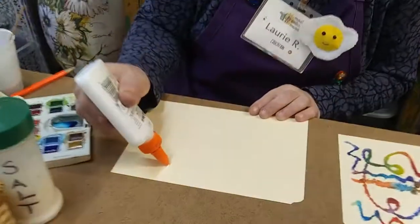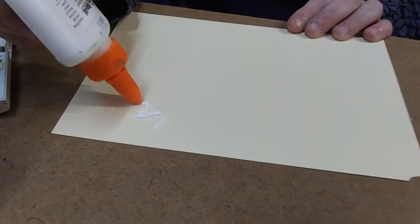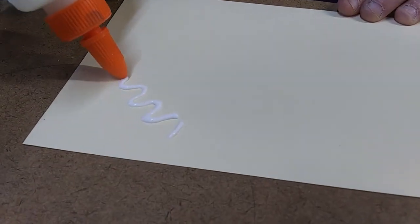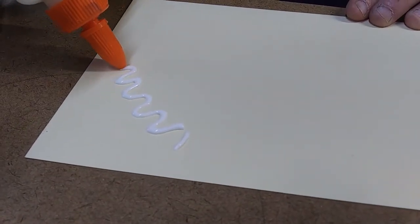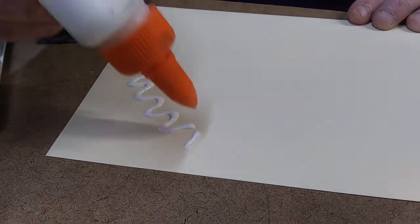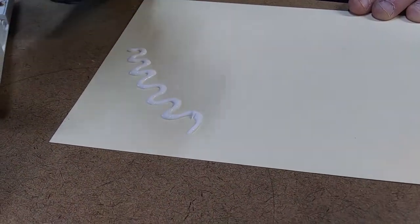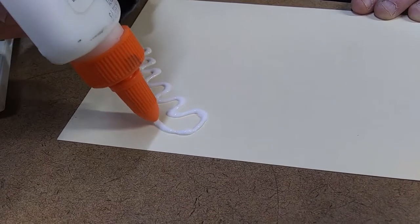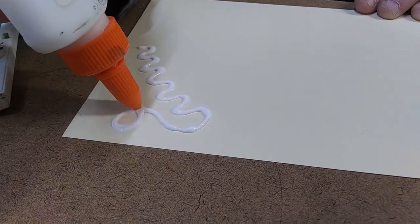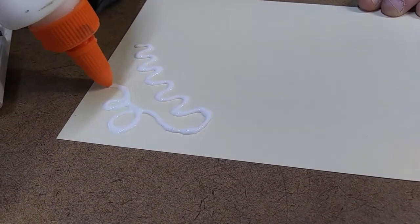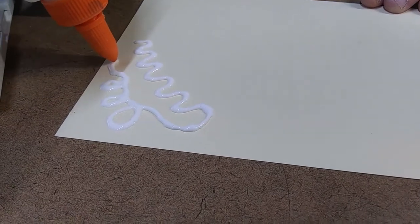I'm going to make nice thick beads of glue on my page using my bottle of glue. I'm going to start mine by making some just swirly abstract lines. You can draw pictures. You can write words.